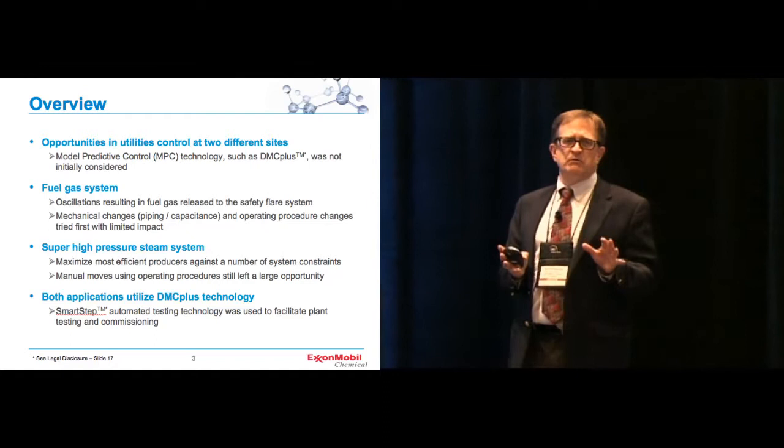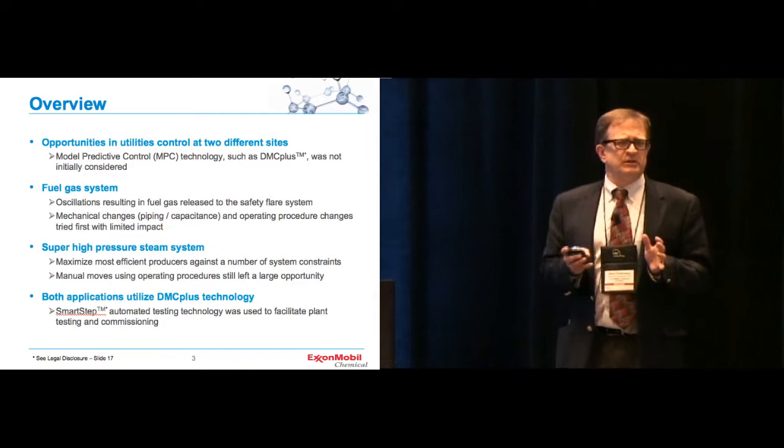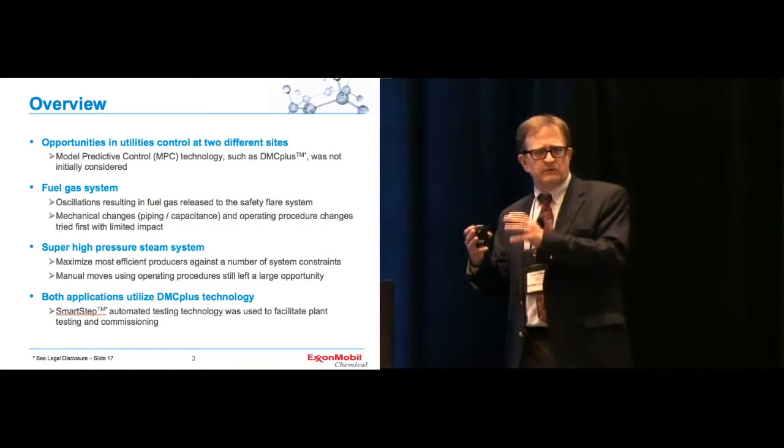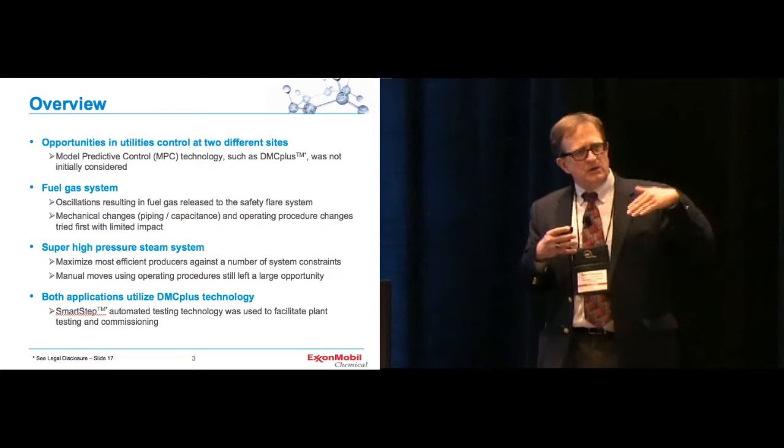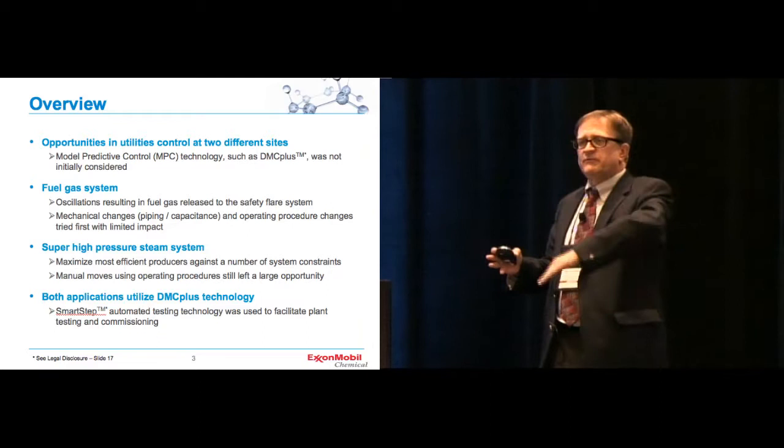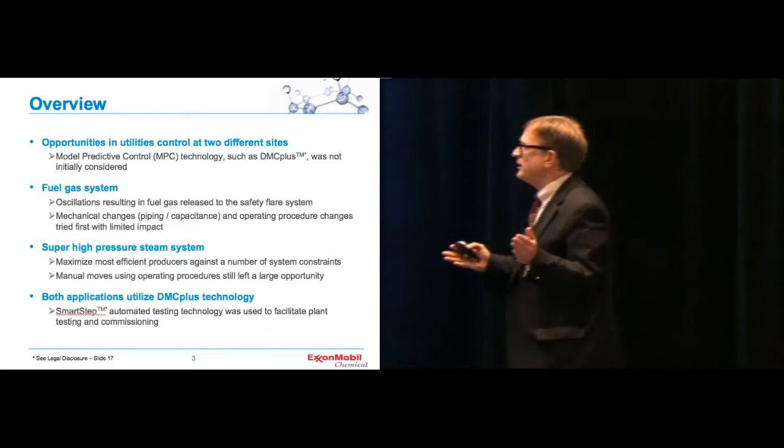Basically, we had opportunities for utilities control at two different sites within the ExxonMobil chemical world. Model predictive control, or in the case, DMC Plus is what we use heavily in our company, was not even really considered. In the case of the fuel gas system, there were oscillations in the pressure of the fuel gas system as the system demands change. The users of the fuel gas would come up and need to come up, or a process unit had a change in operation that was supplying fuel gas to the system, and so they needed to make up the change amount of additional fuel gas that were bringing into the unit. That system causes pressure fluctuations, which ended up releasing fuel gas to the flare. When you put fuel gas into the safety flare system, you're just burning fuel for no good reason. It's wasting energy.